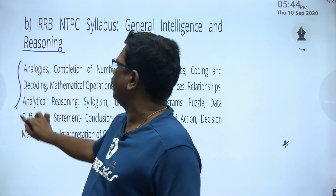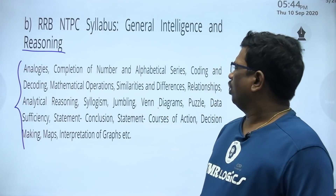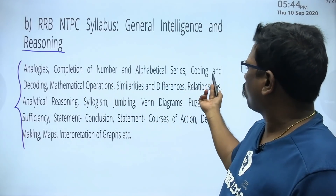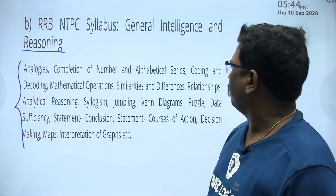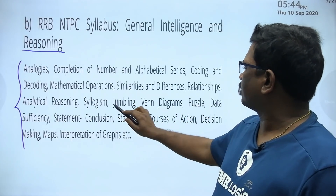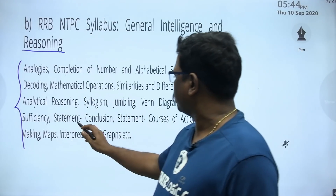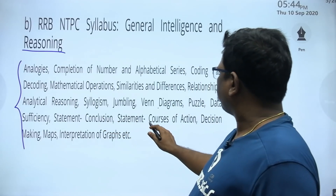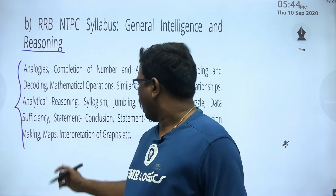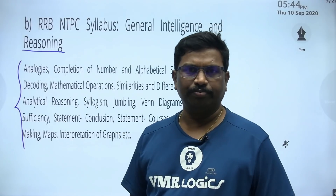Coming to Reasoning syllabus: Analogies, completion of Number and Alphabetical Series, Coding and Decoding, Mathematical Operations, Similarities and Differences, Relationships, Analytical Reasoning, Syllogisms, Jumbling, Venn Diagrams, Puzzles, Data Sufficiency, Statement-Conclusions, Statement-Course of Action, Decision Making, Maps, and Interpretation of Graphs.